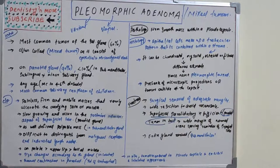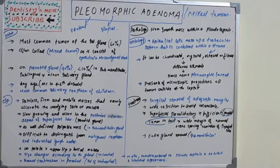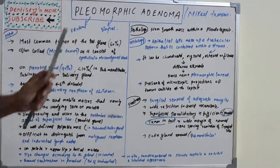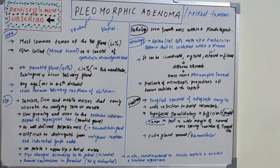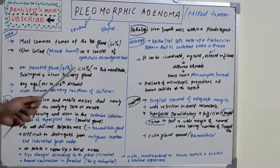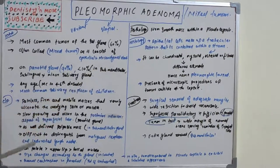Pleomorphic adenoma is a salivary gland tumor and is the most common tumor of salivary glands, comprising 60% of the total tumors. The second most common is Warthin's tumor. It is often called a mixed tumor as it consists of epithelial and mesenchymal elements. It most commonly affects the parotid gland, accounting for 90% of cases.